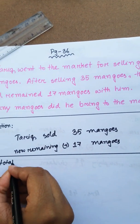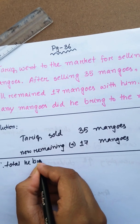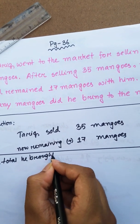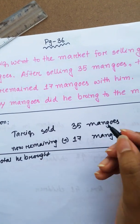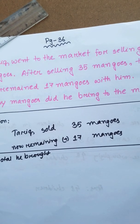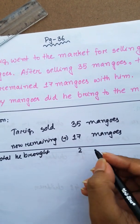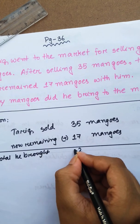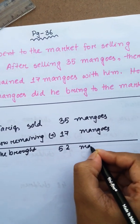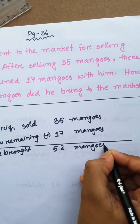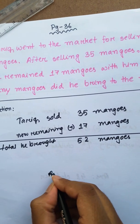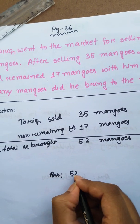So total he brought: 7 plus 5 is 12. That's 1, 1, 1, 2, 3 plus 2 equals 5. 52 mangoes. Answer: 52 mangoes.